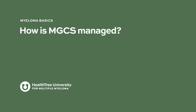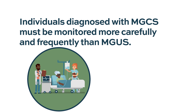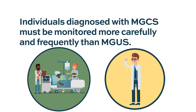Patients with monoclonal gammopathy of undetermined significance are monitored. What we're trying to learn is which patients we need to monitor more carefully and more frequently, because we think their risk of developing a myeloma-related problem or enough myeloma to treat could be coming soon.